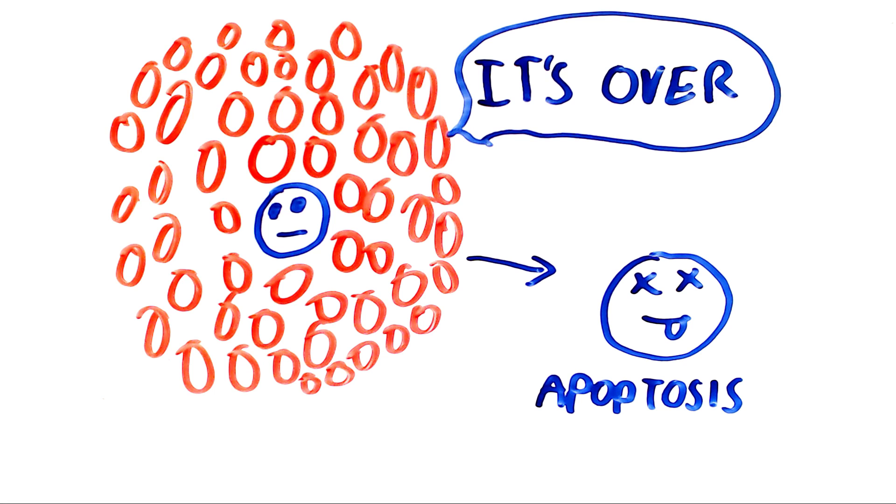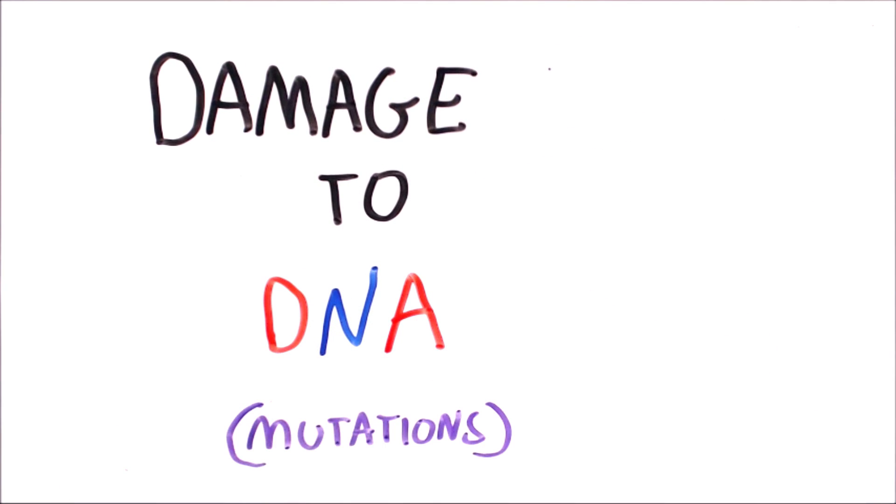This is where cancer comes in. There are dozens of different types of cancers, but fundamentally they are all the result of damage to DNA mutations that tells the cells when to make a copy of itself and when to stop and undergo apoptosis.